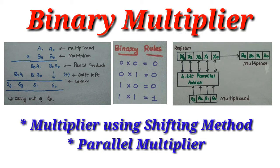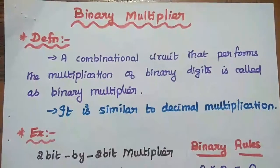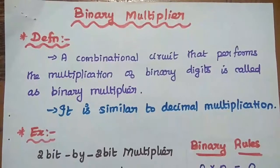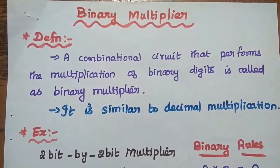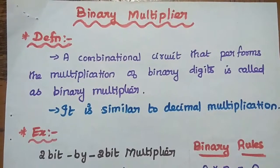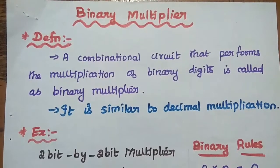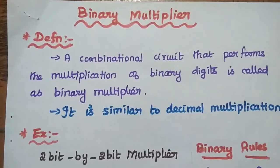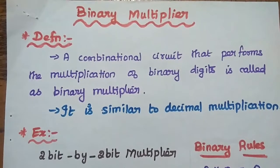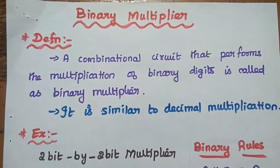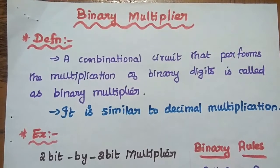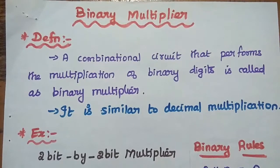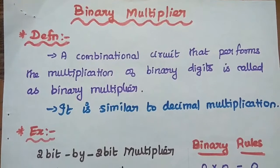Now we are going to discuss binary multiplier and its methods in detail. Let's start with the definition of binary multiplier. It is a combinational circuit that performs the multiplication of binary digits. The binary multiplication process is similar to decimal multiplication.